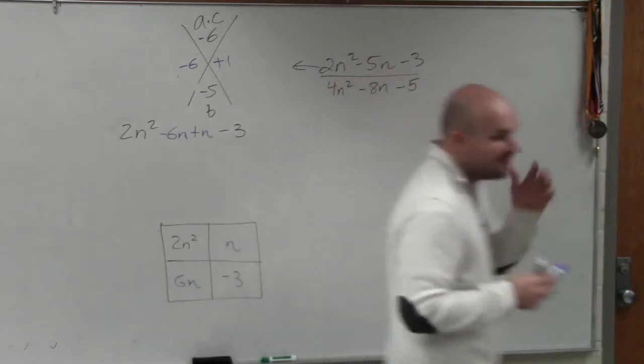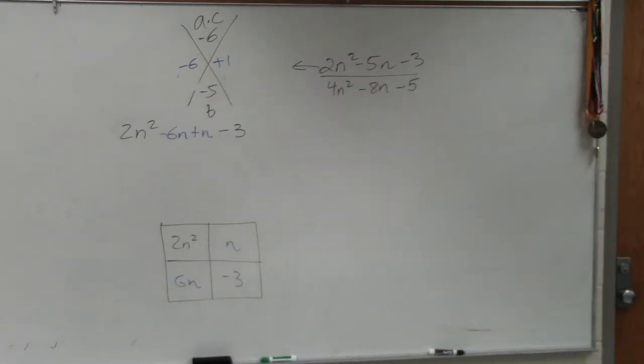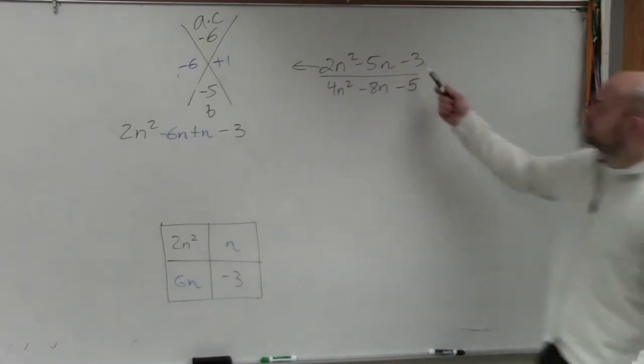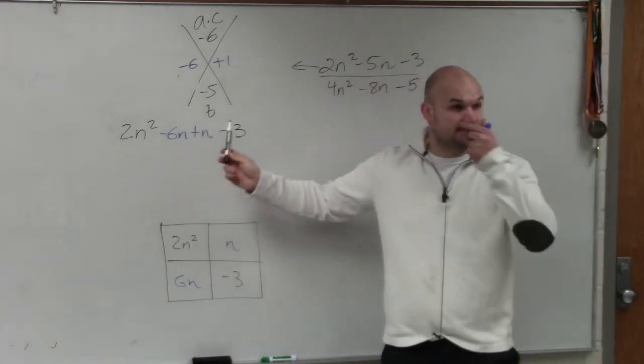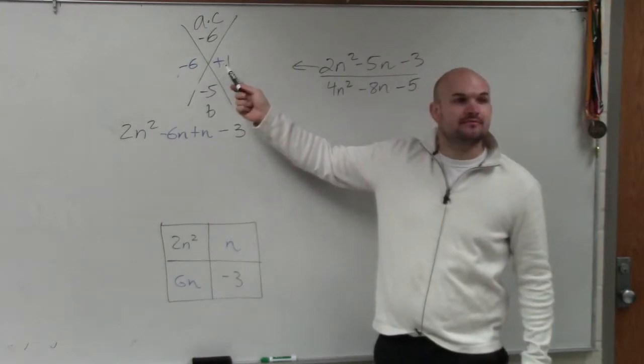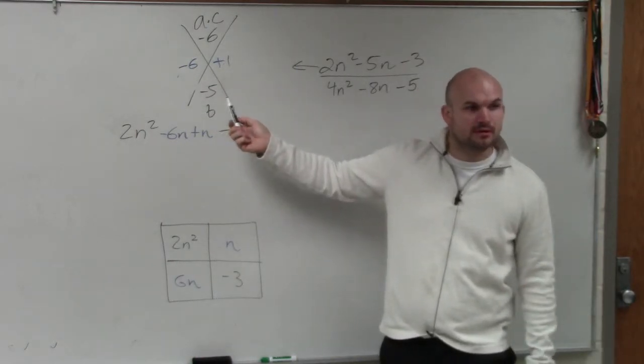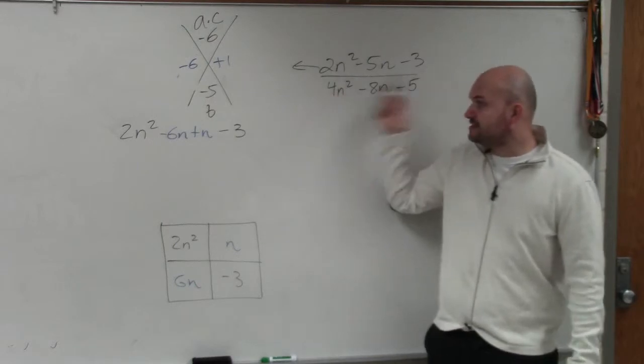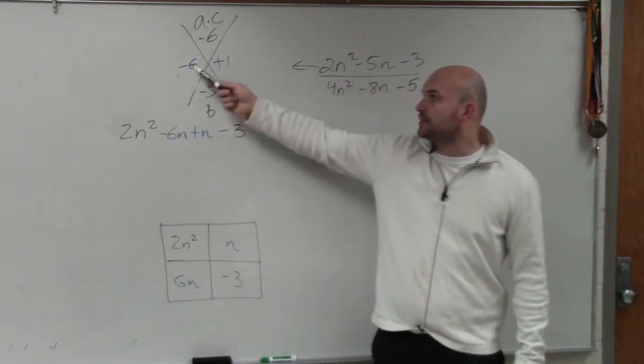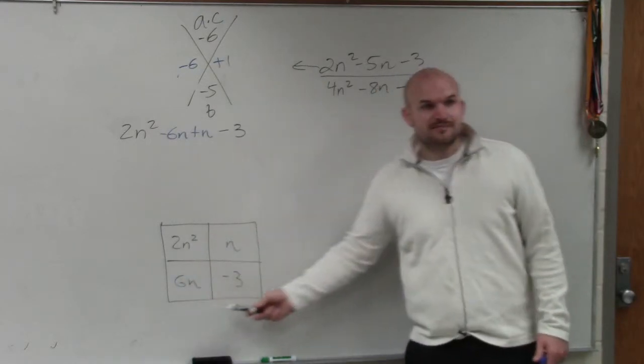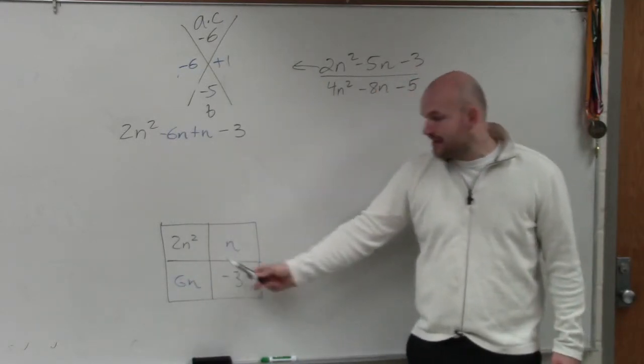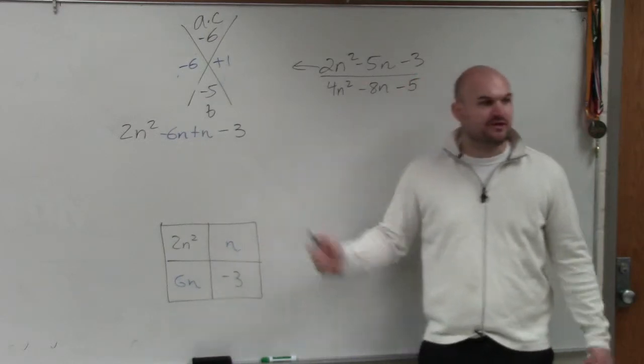So there's two methods that we basically talked about. You guys can either rewrite the problem, but instead of using negative 5n, you could use negative 6n plus n. Or you can use the box, and put the 2n squared and the negative 3, and then combine the middle two terms to fill in your other boxes.